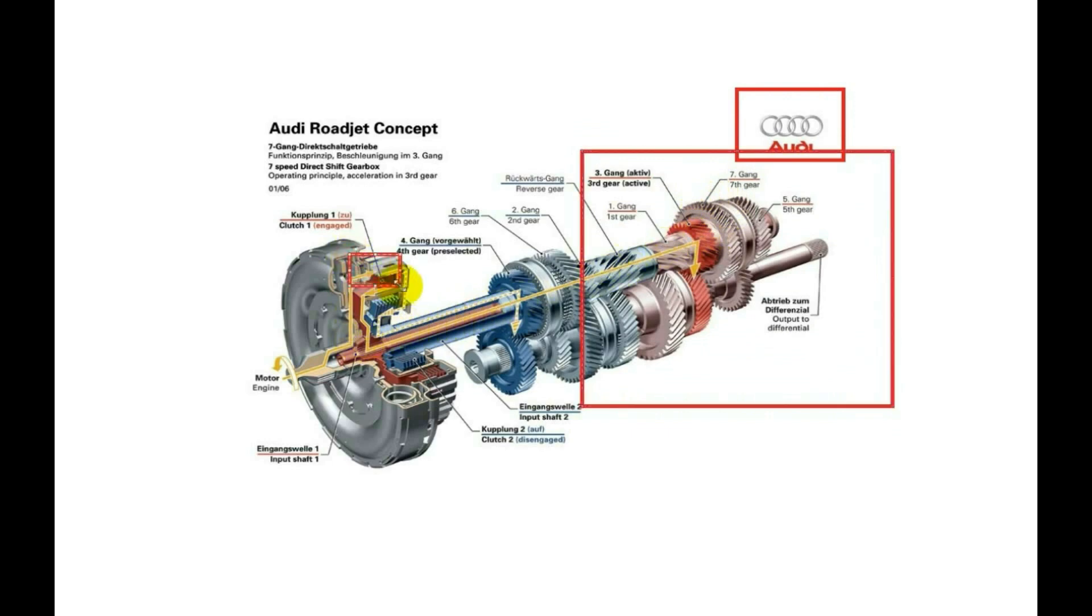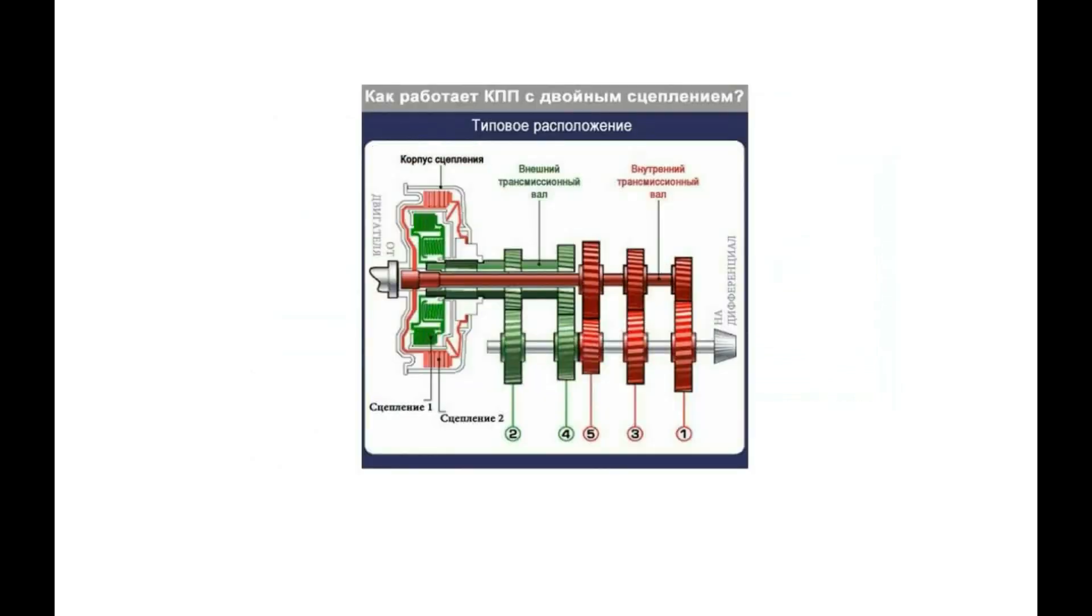The second part of the DSG box is responsible for even gears. The third scheme is completely in Russian. It is very easy to distinguish two parts here. Here is the first part, red, responsible for odd gears. It has a red shaft and red clutch. And the second part is green, which is responsible for even gears: second and fourth. It has its own green shaft and green clutch.